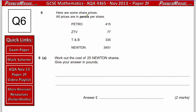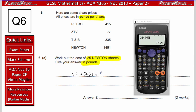Question 6. Here are some share prices — all prices are in pence per share. We need to work out the cost of 25 Newton shares and give our answer in pounds. The Newton shares cost 3,451 pence each, so to buy 25 shares we do 25 times 3,451, which gives us 82,824 pence. Remembering there are 100 pence in each pound, we divide by 100 — shifting the decimal point two places — giving us £828.24.